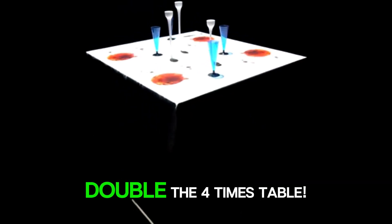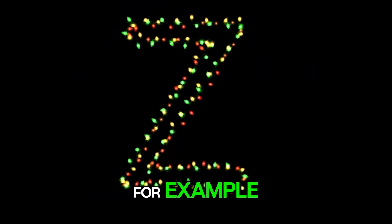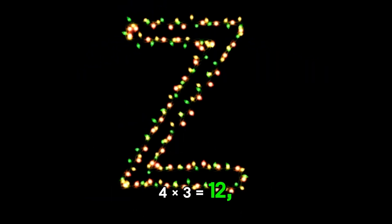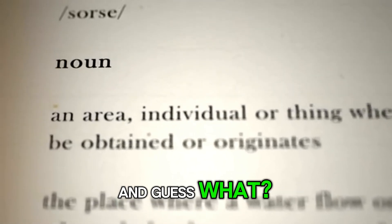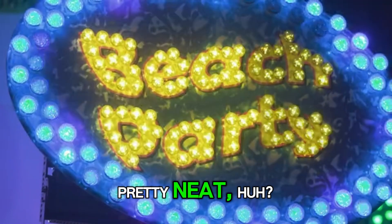Here's another clever trick. Double the four times table. For example, four times three equals twelve, right? Now double that. What do you get? Twenty-four. And guess what? That's eight times three. Pretty neat, huh?